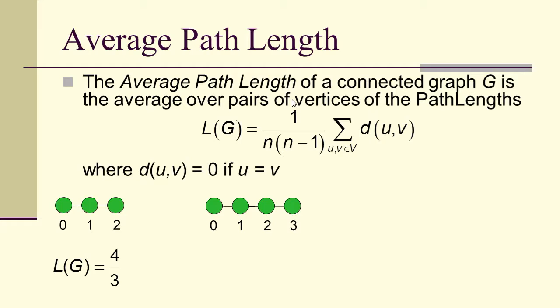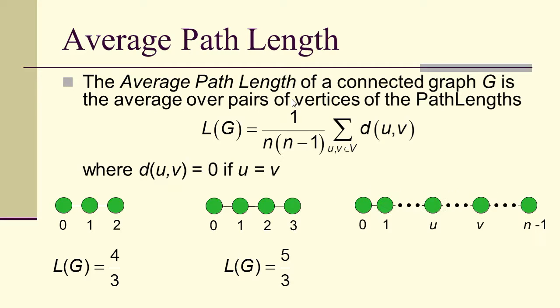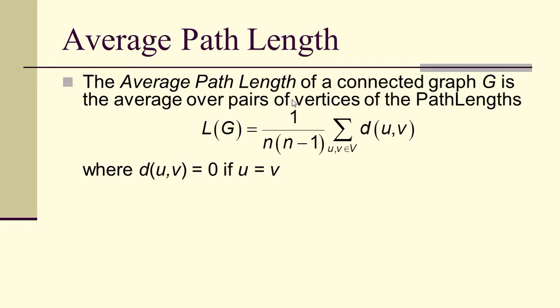If I have a path 0, 1, 2, 3, then from 0 to 1, 1 to 2, 2 to 3 is distance 1. 0 to 2, 1 to 3 is distance 2. And 0 to 3 is distance 3. That means I have 3 occurrences of distance 1, 2 of distance 2, and 1 of distance 3, divided by 6 total. That means the average path length of the path on 3 vertices is 5 thirds. If we do this in general, where we go from 0 to n minus 1, so we have n vertices and a path through n vertices, let you think about it. But you can see there is a pattern, and you can figure it out.